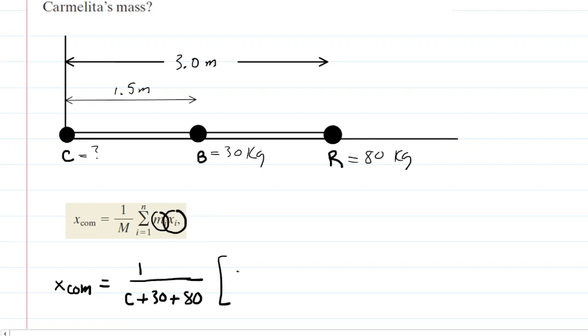So for Carmelita, you take her unknown mass and multiply it by her x-coordinate. She's located at the origin of this system, and so her x-coordinate would be zero. For the boat, you multiply its mass times its x-coordinate, which is that one and a half meters. And then for Ricardo, his mass is 80 multiplied by the length of the boat, which is his x-coordinate.